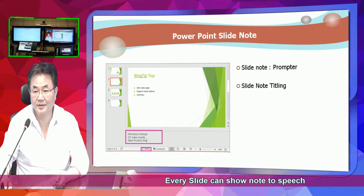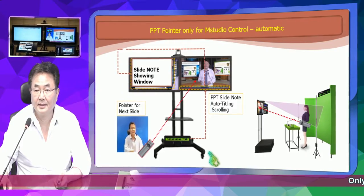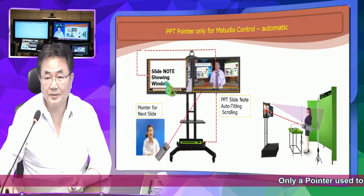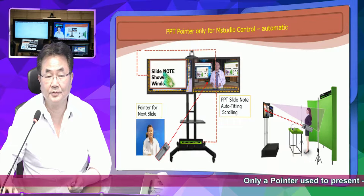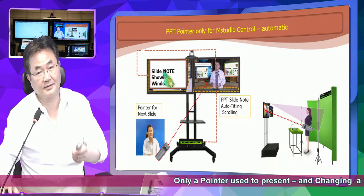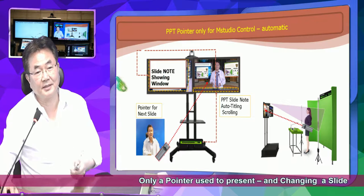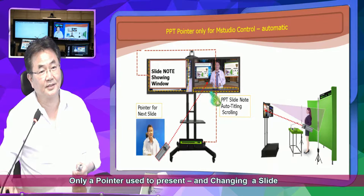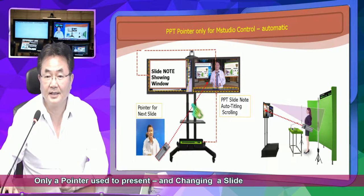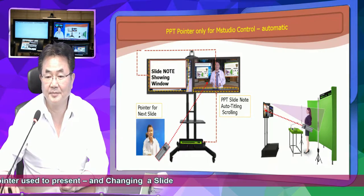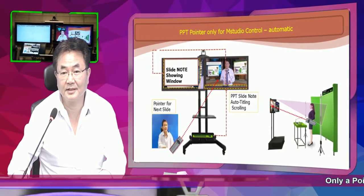Every slide can show the note on this screen to work as a prompter. You can also enable this to show on the titling there. So MStudio simply makes the slide note show on a window to act like a prompter. When I look here and speak, my face moves to here automatically. And if I come in closer, my face becomes bigger — you can make a bigger screen like this.